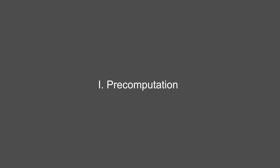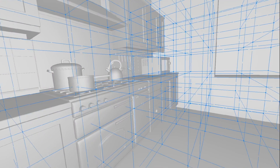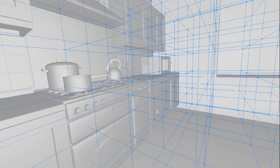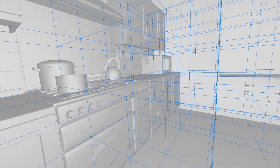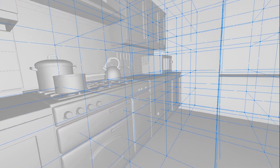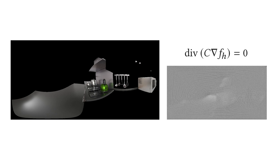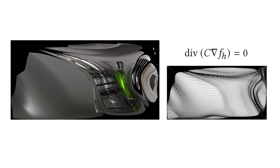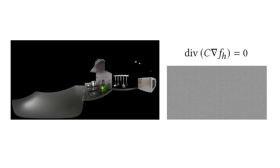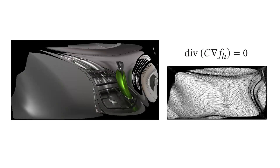In our pre-computation stage, we place probes in the scene and use them to capture 360-degree specular information. Storing this using traditional spherical parametrizations leads to highly suboptimal memory usage. As a remedy, we devise a custom parametrization which allocates resolution adaptively, taking into account geometry and material properties.